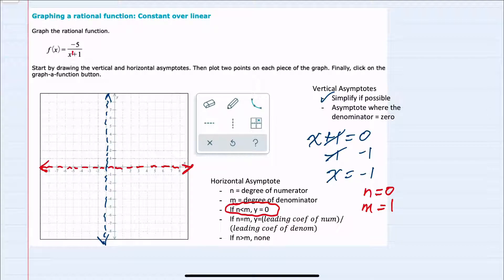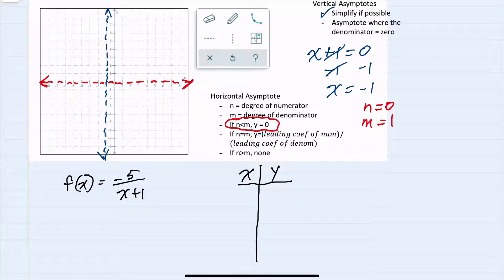At this point, we've found both the horizontal and vertical asymptotes. We're next told to plot two points on each piece of the graph. So here I'll make a small table starting to the left of the vertical asymptote. I can plug in negative 2. And substituting into our function, we would have negative 5 over negative 2 plus 1. That's negative 5 over negative 1, which simplifies to 5. So we have the point negative 2, 5.